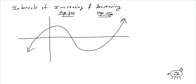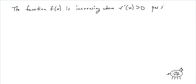Okay, so let's get rid of all this stuff here and let's just write it out. So, the function f(x) is increasing when f'(x) is, of course, greater than 0. Because, again, that's a positive slope.